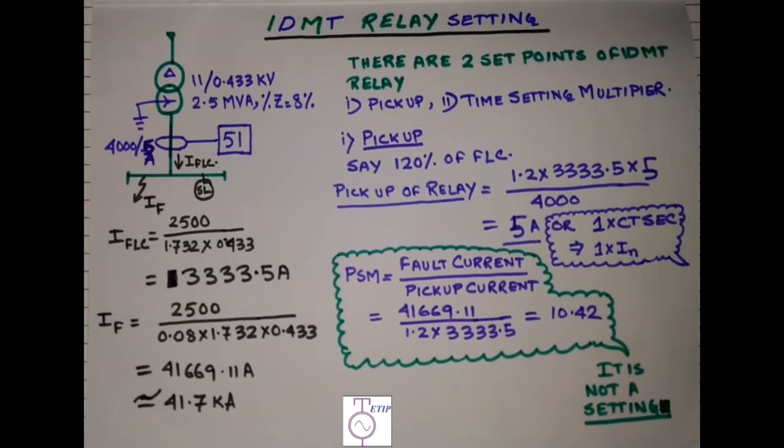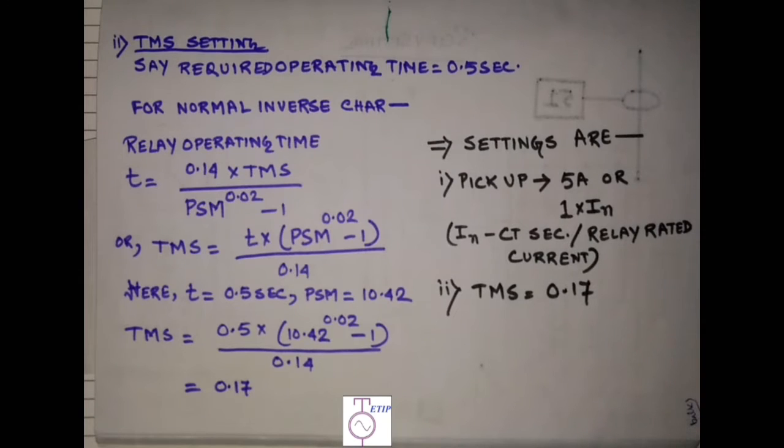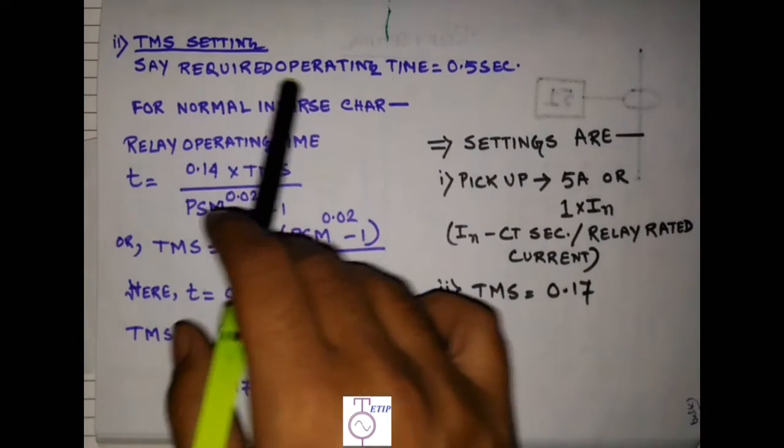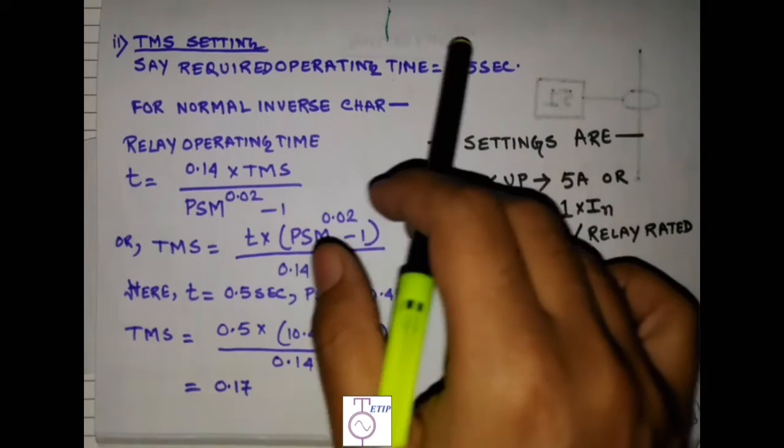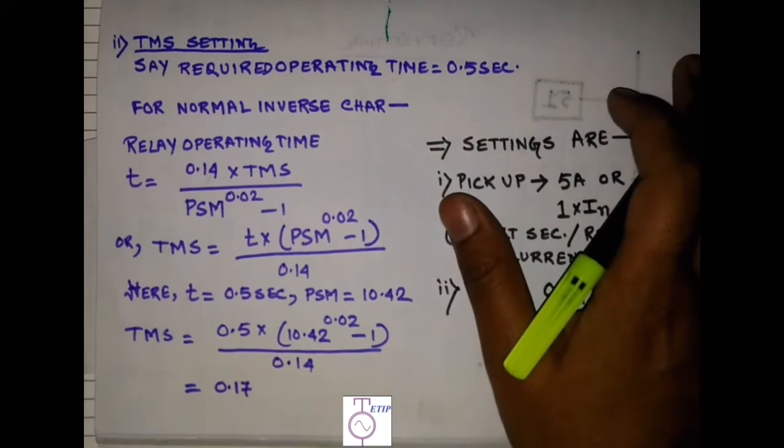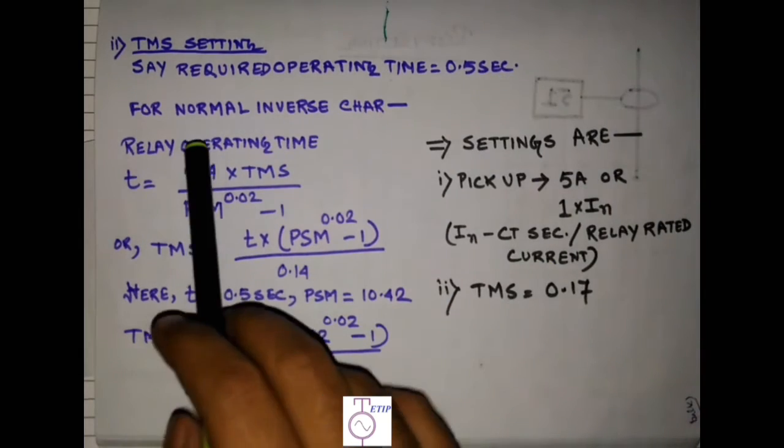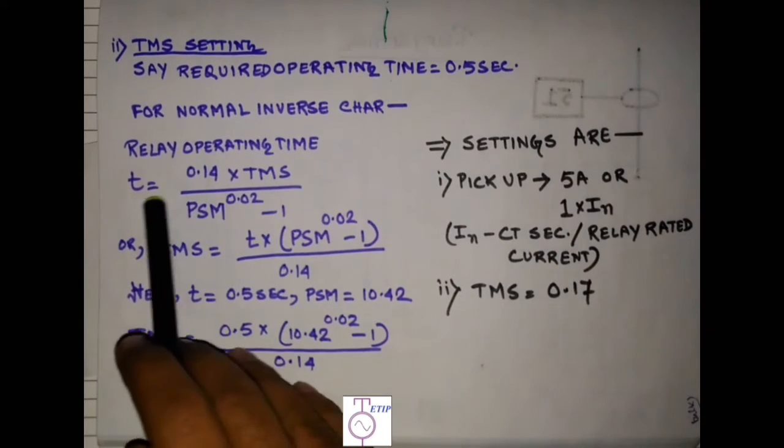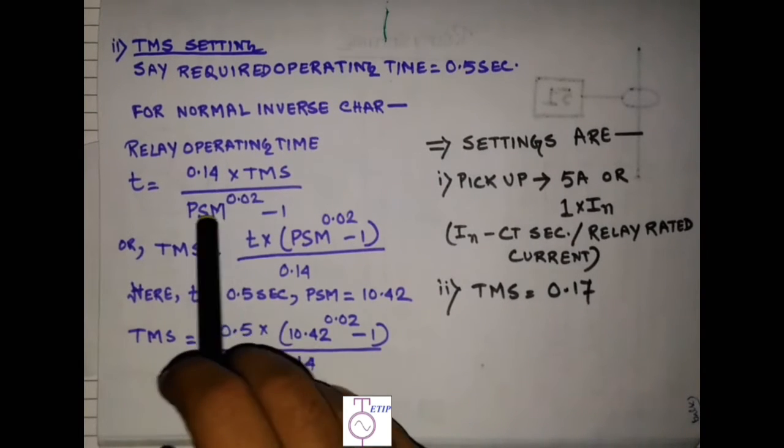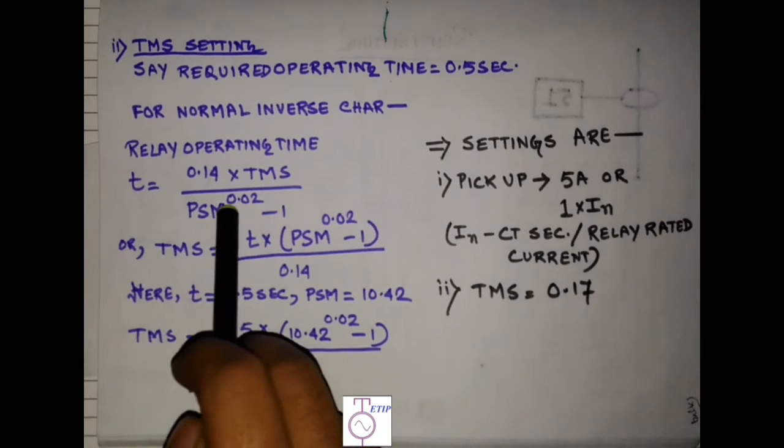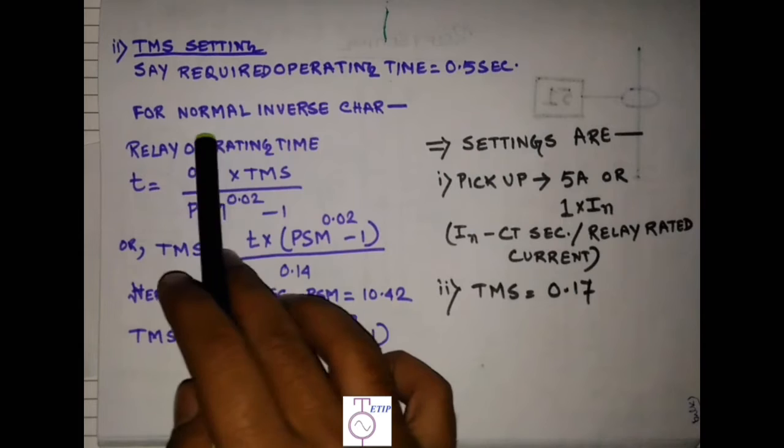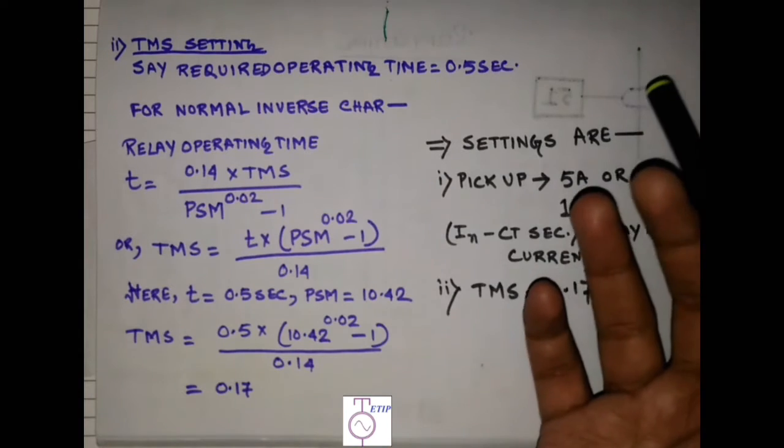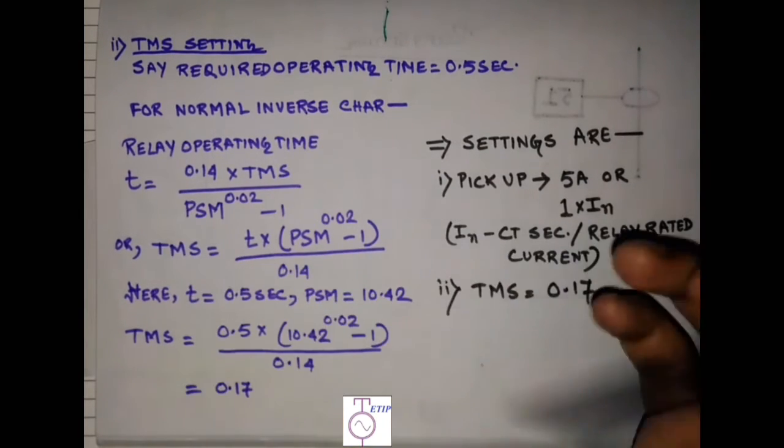We will check what is the next step. Let us check the further steps, that is TMS settings. Say our required operating time of the relay is 0.5 second, so we have to set the relay such that it operates at 0.5 second. If the relay characteristics is normal inverse type, then the relay operating time will be t = 0.14 × TMS / (PSM^0.02 - 1). Here you will need the PSM. Now there are many other characteristics also like very inverse characteristics, extreme inverse characteristics, but in general practice normal inverse characteristics relays are used.